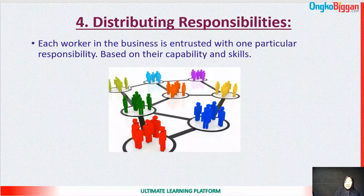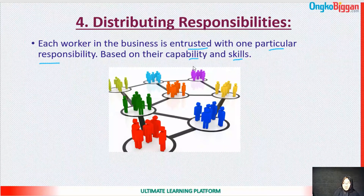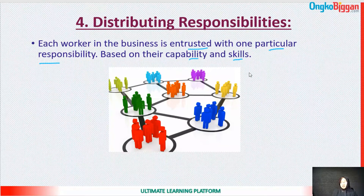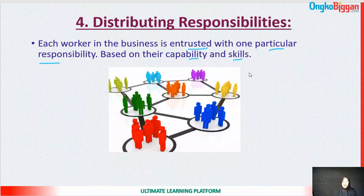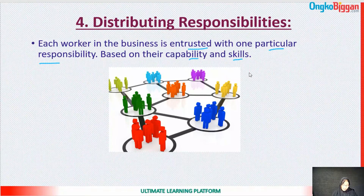The fourth characteristic is distributing responsibilities. Each worker in the business is entrusted with one particular responsibility based on their capability and skill. An organization must be skillful and knowledgeable enough to distribute responsibilities correctly, otherwise the assigned work will be in the hands of the wrong people and the total goal of the organization will fail if tasks are given without knowing the capability and skill of the employee.